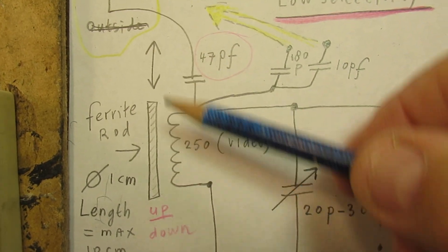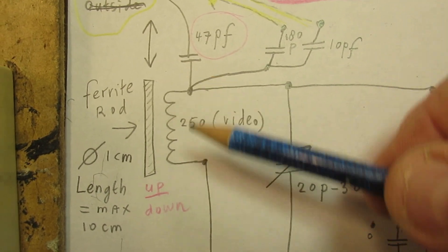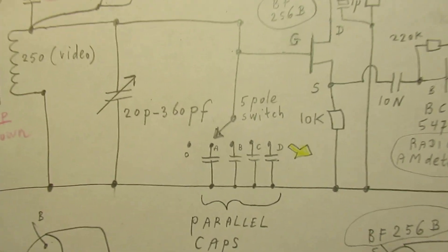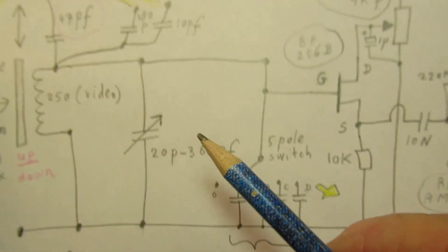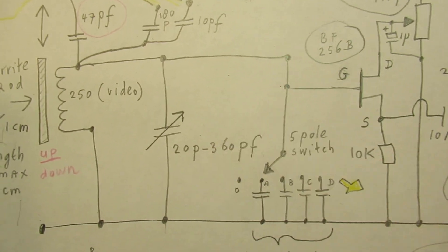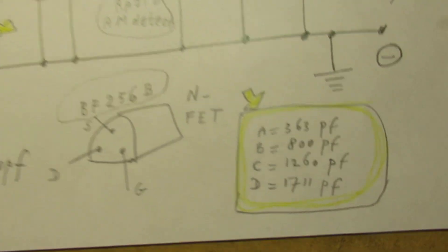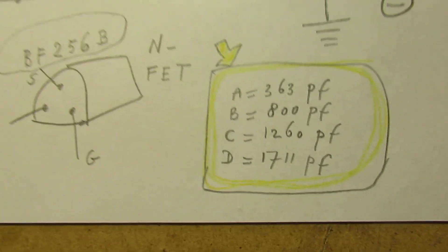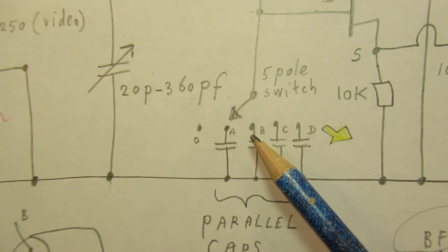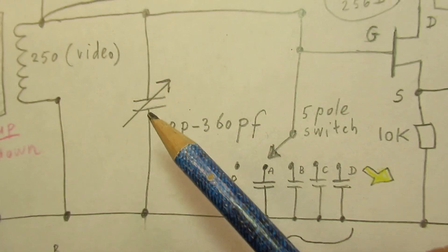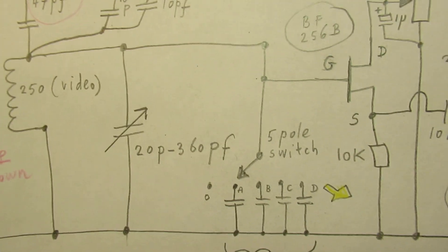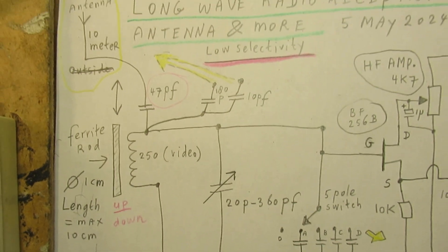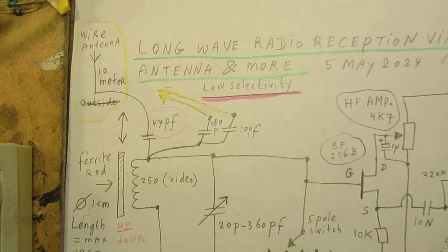The ferrite rod moves in and out to tune. Tuning capacitors here, and here are a few extra capacitors that bridge the tuning capacitors. These are the values, and it means you can switch in another tuning capacitor to get to another frequency band. Everything to do with this very simple setup.